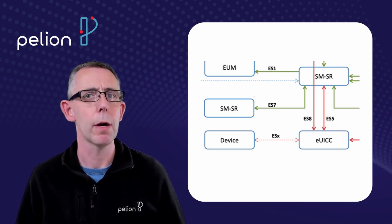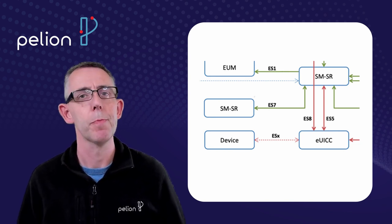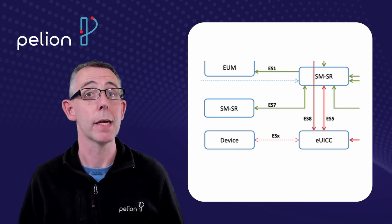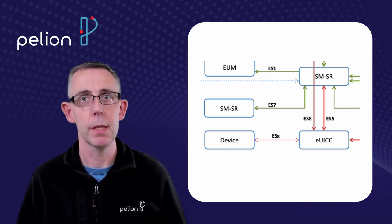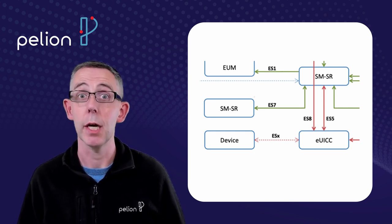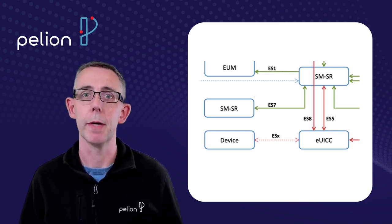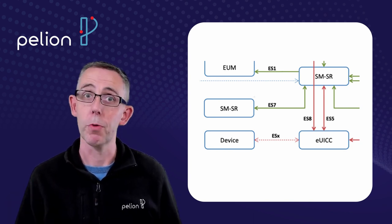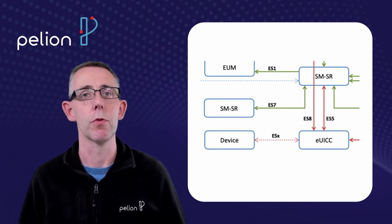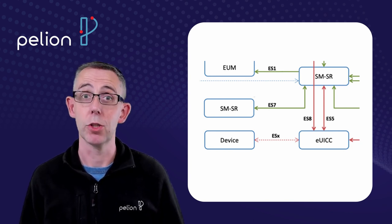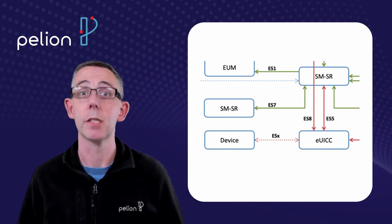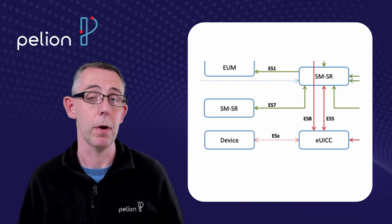Having the EUICC allows you to download those profiles in real time when you need them. That means that you can load up at the factory a bunch of profiles if you want or you can leave it until you're in the field. There's always going to be an initial bootstrap connection, typically the ones that we use are international so the device will always be able to sign on to a mobile network, phone home, report that it's online and wait for instructions for a genuine SIM profile for that region to be downloaded.